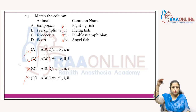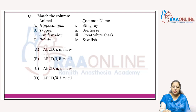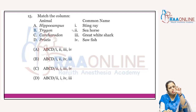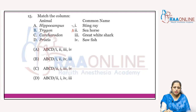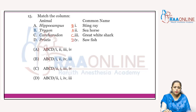Exocoetus, the flying fish, can fly up to six meters above the sea surface. Next match-the-column: animals with common names. Hippocampus is the seahorse — very small and tiny, body shape resembles a horse with a prehensile tail. That is A2. Trigon is the stingray. Carcharodon is the great white shark. Pristis is the sawfish.